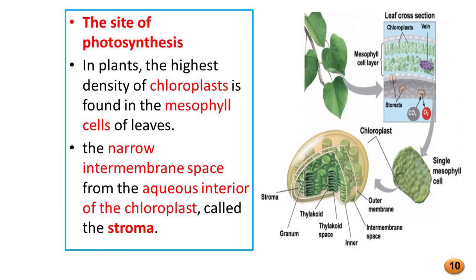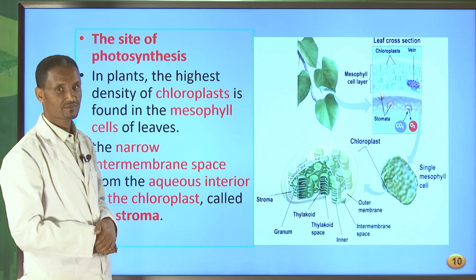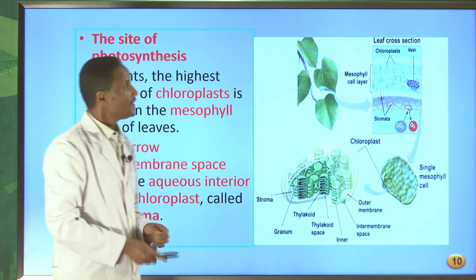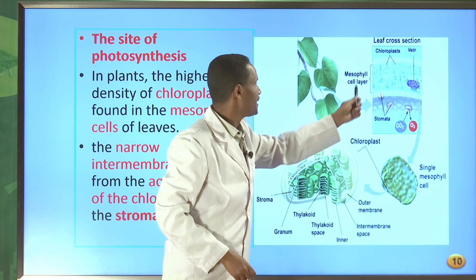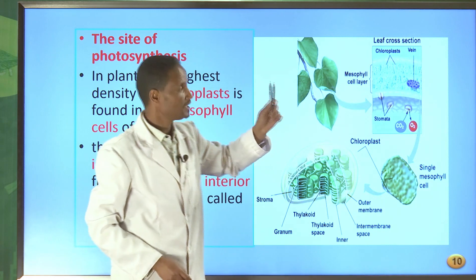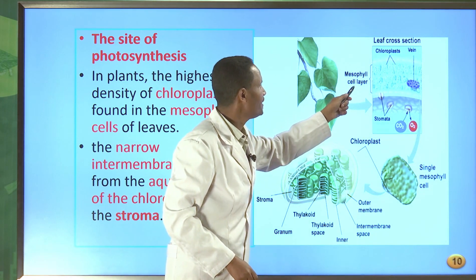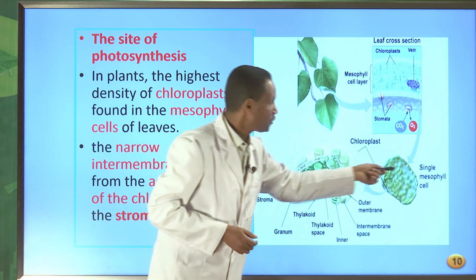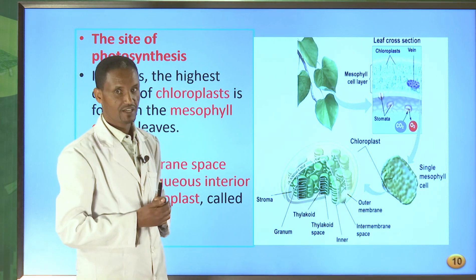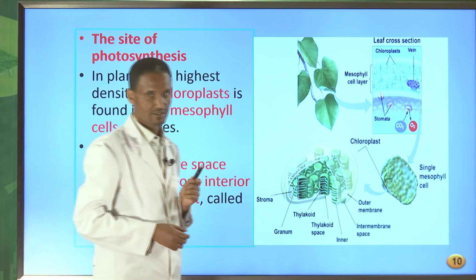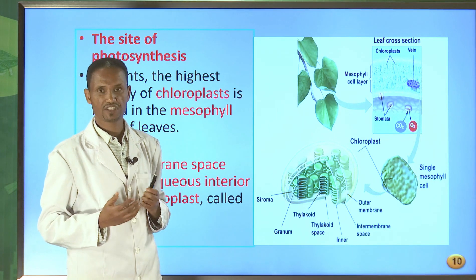The site of photosynthesis: in plants, the highest density of chloroplasts is found in the mesophyll cells of the leaf. If you take a single mesophyll cell, inside this cell there is an organelle called the chloroplast. This chloroplast is unique to plant cells — it is not found in animal cells. The chloroplast has its own structures or membranes: an outer membrane, an inter-membrane space, and an inner membrane.